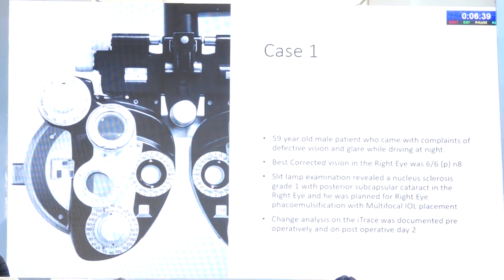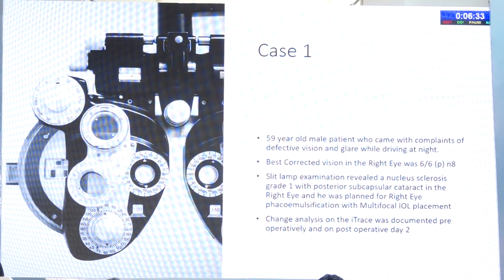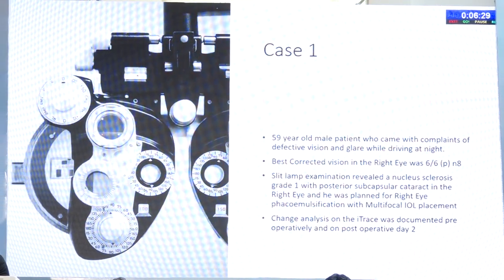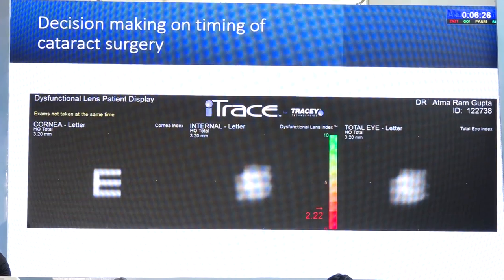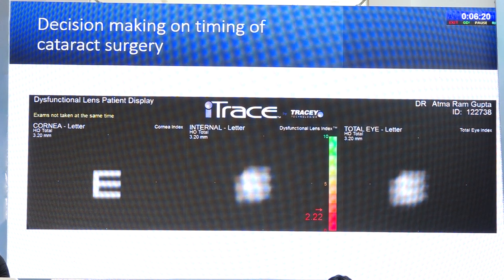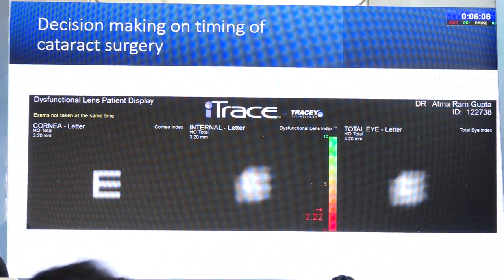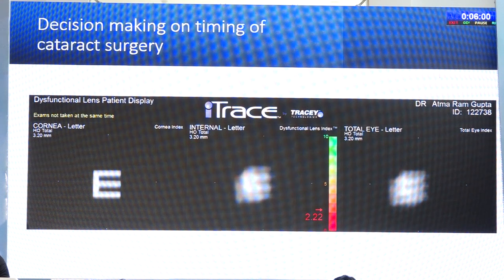Case 1: a 59-year-old male. Best corrected vision in one eye was 6/6 N8. On slit-lamp examination he really did not have much cataract — just nuclear sclerosis and a little posterior subcapsular cataract. But when you look at the I-Trace images, it breaks down the optical system: it tells you the aberrations in the cornea, in the lens, and gives you total eye aberrations. Looking at the internal E-chart, it is very distorted, meaning the patient has a significant aberration in the optical lens system — this patient needs cataract surgery sooner rather than later. This can help decision-making on when to do cataract surgery.